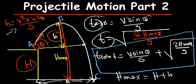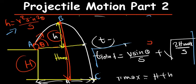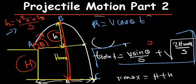The range is found the same way: range = vx × t = v·cosθ × t, where t is the total time calculated from the combined formula. Once you know how to find that total time, the range follows directly.